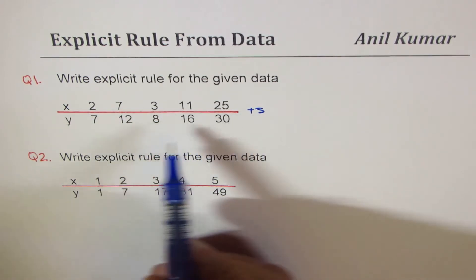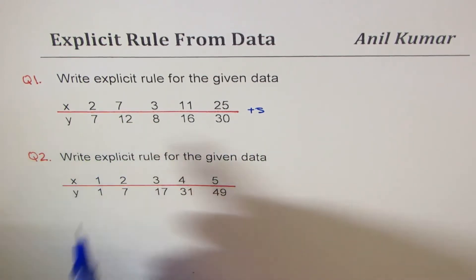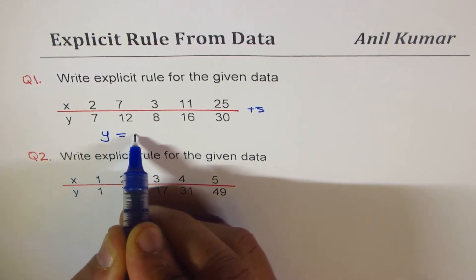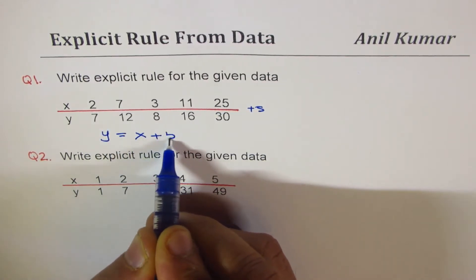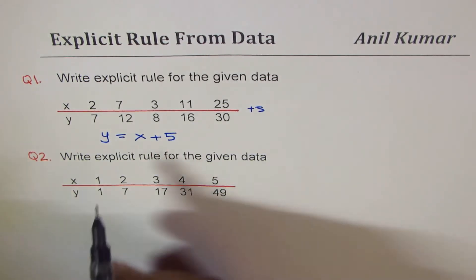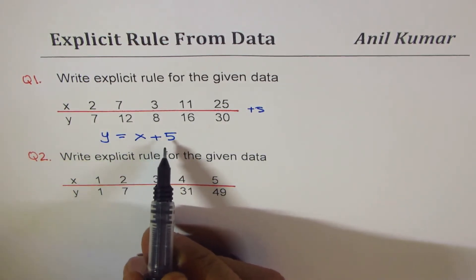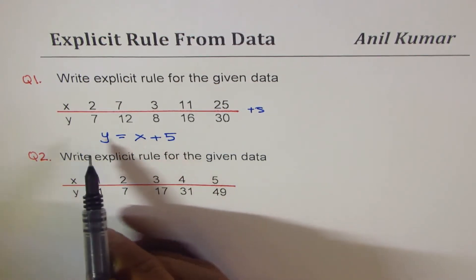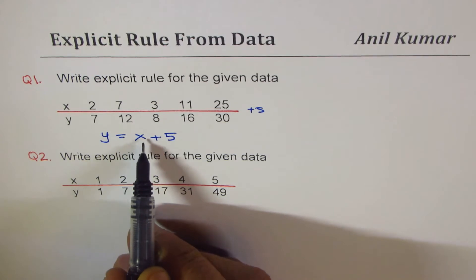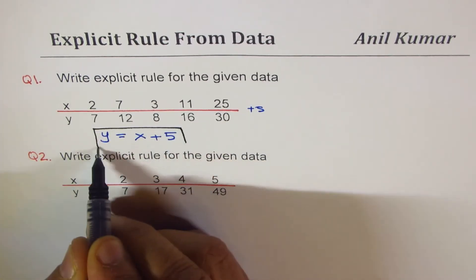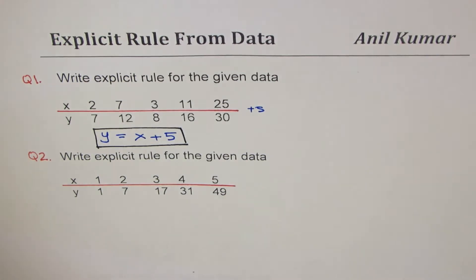And therefore I can write the relation y equals x plus 5. Now if you can write a relation y equals x plus 5, we say that is explicitly written. So y has been written in terms of x, so that becomes the solution for question number one.